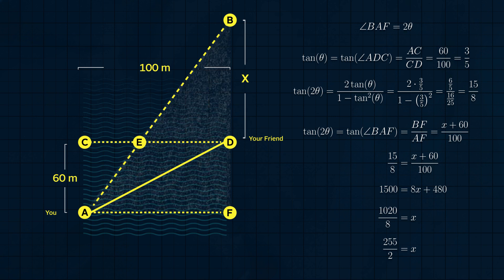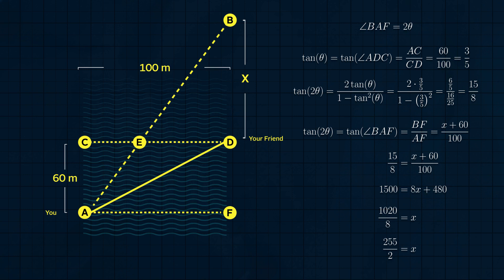Using the right triangle ABF, we can see that tan of angle BAF is x plus 60 over 100, so 15 eighths equals x plus 60 over 100, and solving for x gives x equals 255 over 2, or 127.5 meters.